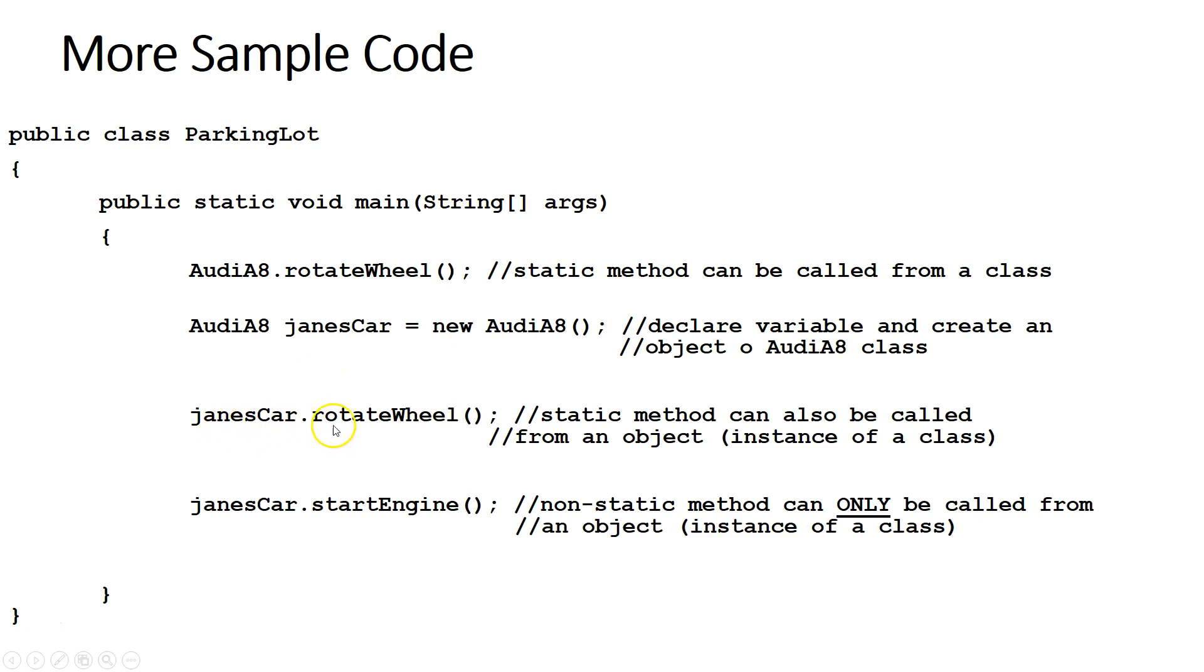Then we're calling Jane's car rotate wheel. Even though rotate wheel is a static method, we can still call it from an instance. And then we're also calling start engine. Start engine is a non-static method. So we can only call this from an instance.